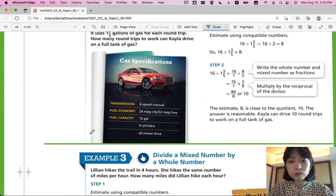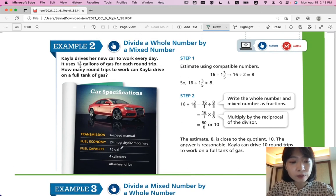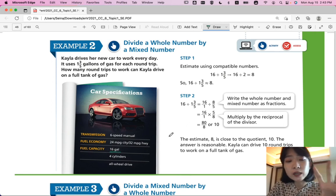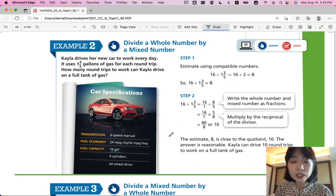Let's look at the next page. Example 2. Divide a whole number by a mixed number. Kayla drives her new car to work every day. It uses 1 and 3 fifth gallons of gas for each round trip. So, it's not a one-way trip. It's a round trip. Going there and coming back. How many round trips to work can Kayla drive on a full tank of gas? So, this car specifications, fuel capacity is 16 gallons. If it has a full tank of gas it has 16 gallons of gas. And if she uses 1 and 3 fifth gallons of gas for each round trip how many of that round trip can she get?